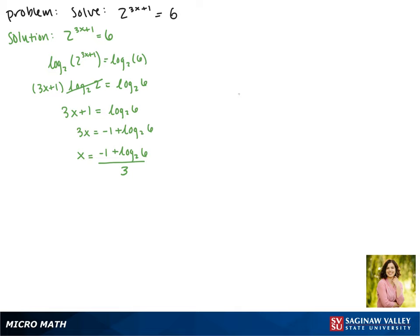Now we can reduce the log base 2 of 6. 6 is the product of 2 and 3, and we can break up these products with addition. So this becomes the log base 2 of 2 plus the log base 2 of 3. The log base 2 of 2 is again 1, so this becomes 1 plus the log base 2 of 3.